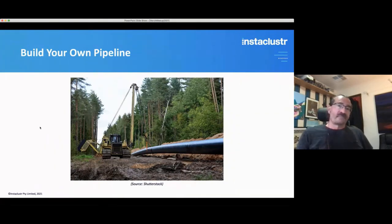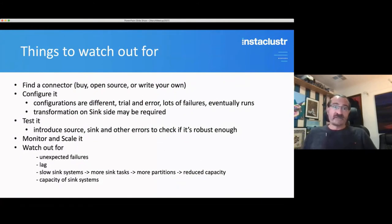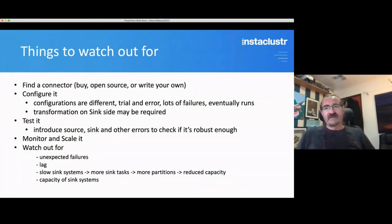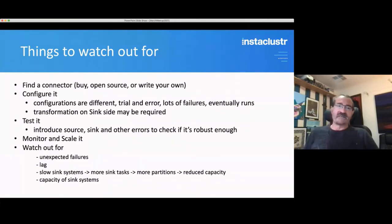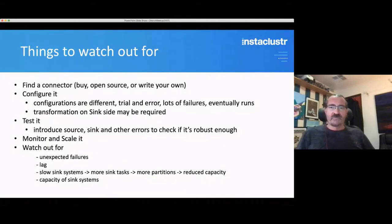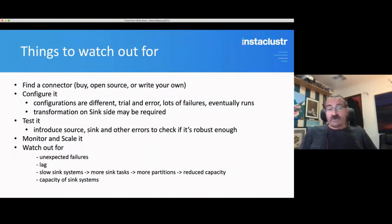If you want to build your own pipeline, here's what to watch out for: first, find a connector — you can buy them, acquire an open source one, or write your own. Then work out how to configure it — configurations are typically different, there's lots of trial and error. Transformation of the data on the sink side may also be required. You should test it out: introduce source, sink, and other errors to check if it's robust enough. You want a pipeline to run continuously without human intervention. Monitor and scale it, watching out for unexpected failures, lag, slow sink systems requiring more sink tasks, and ensure the sink system has sufficient capacity.